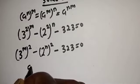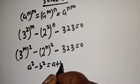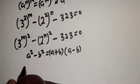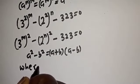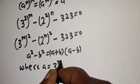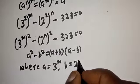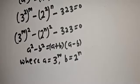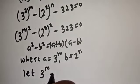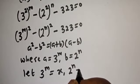Also, remember this rule: if you have a squared minus b squared, this equals a plus b multiplied by a minus b. Here, a is equal to 3 raised to power m and b is equal to 2 raised to power n. In this case, let's say 3 raised to power m equals s, and 2 raised to power n equals y.